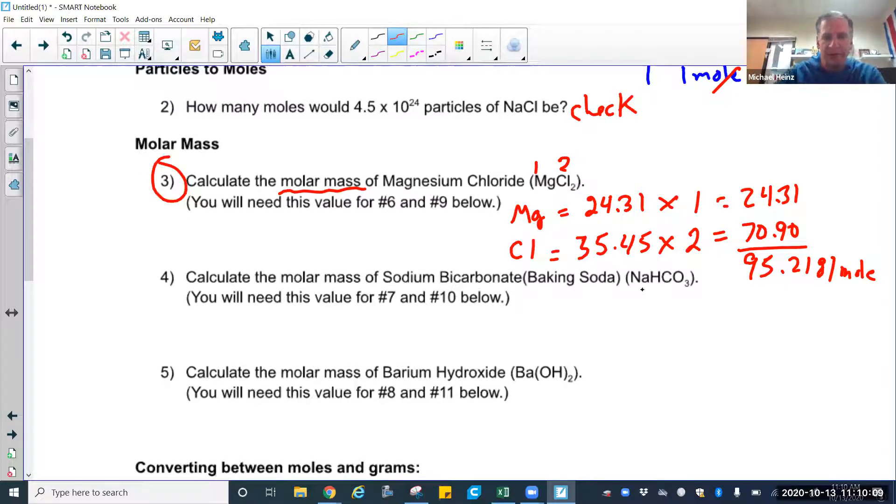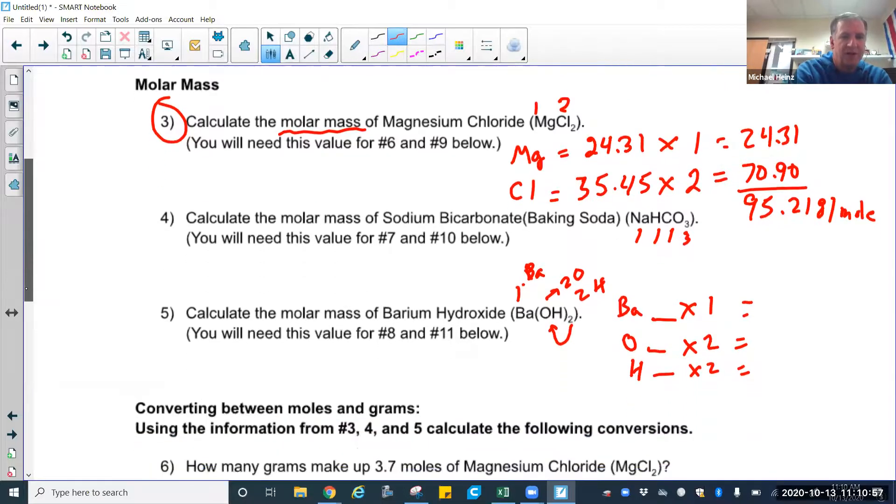Number four and number five are going to be the same thing. Just as a quick review, in number four, you have one Na, one H, one C, and then three O's. In barium hydroxide, you have one Ba. This two is in parentheses. Remember, that tells me I have two hydroxides, which means I'm going to have two O's and I have two H's. So they double them up. So that's going to be Ba times one, whatever its mass is, oxygen times two, and hydrogen times two. And then you add those up to get the molar mass. The answers are shown on the answer key that I put in the classroom.